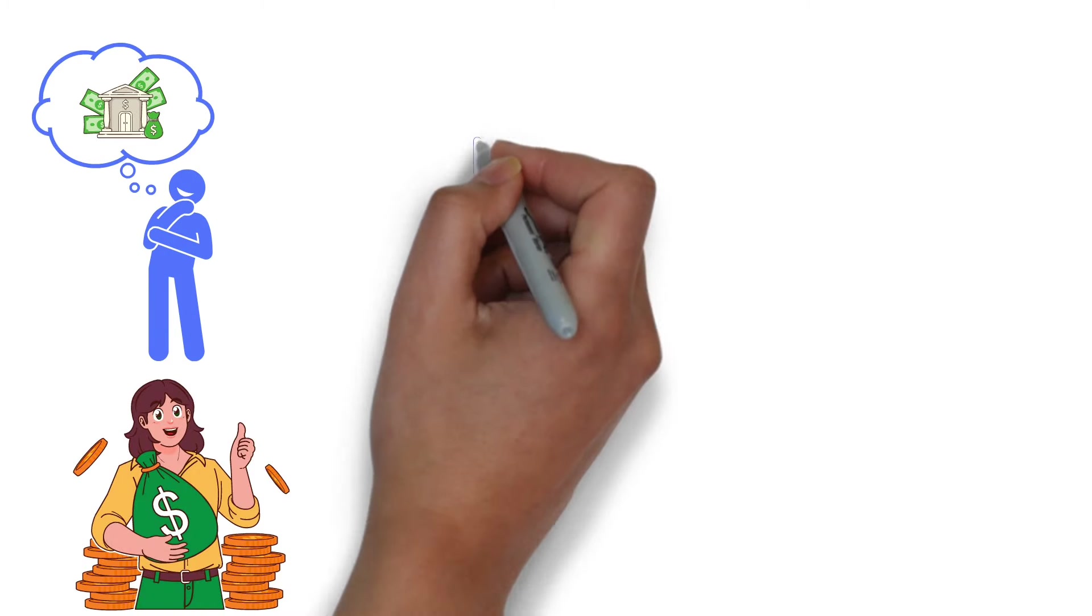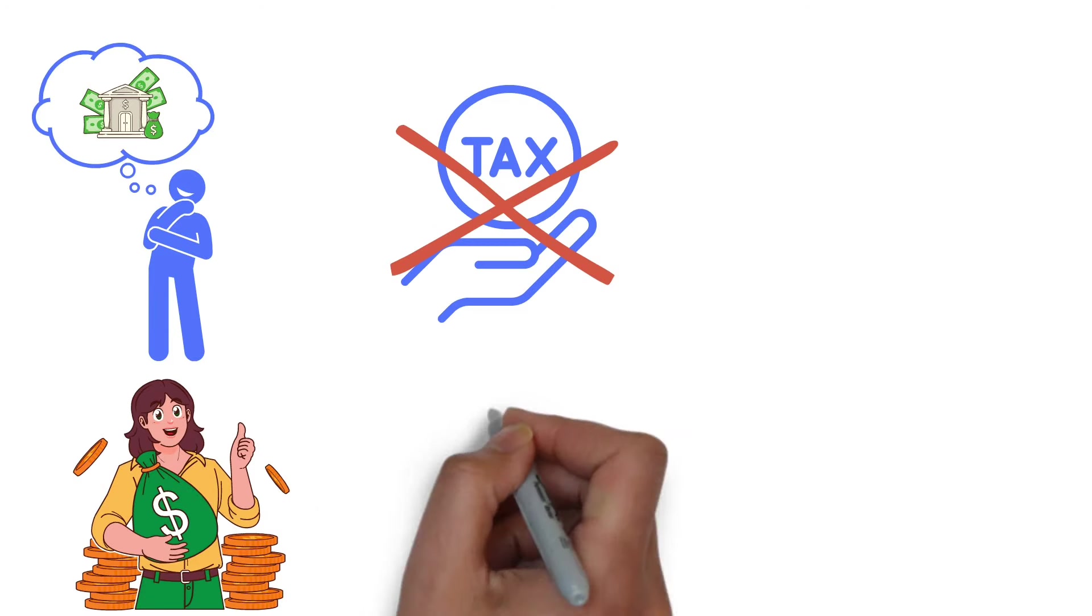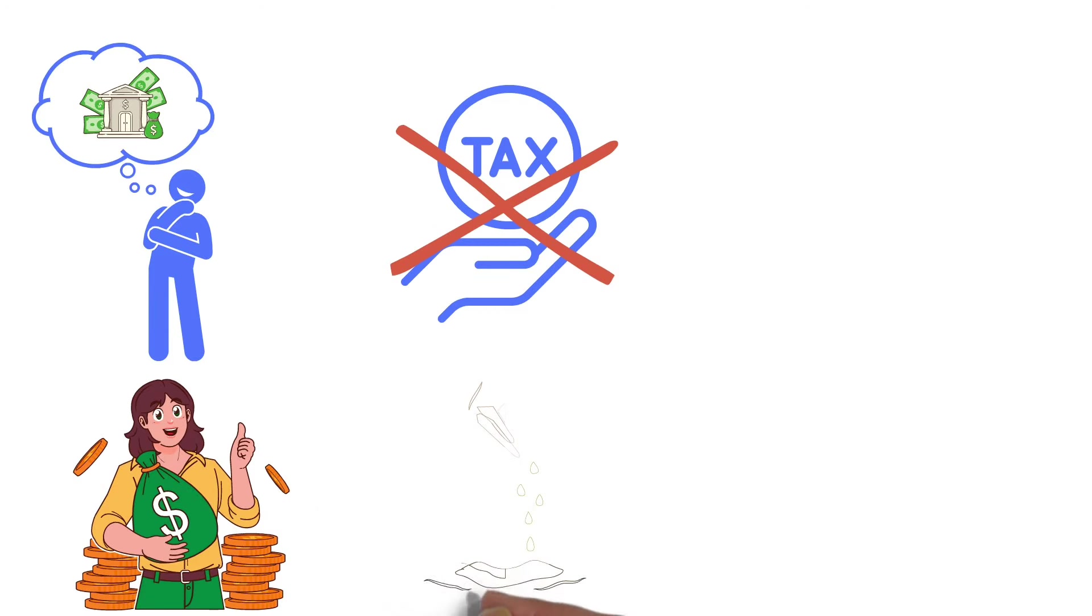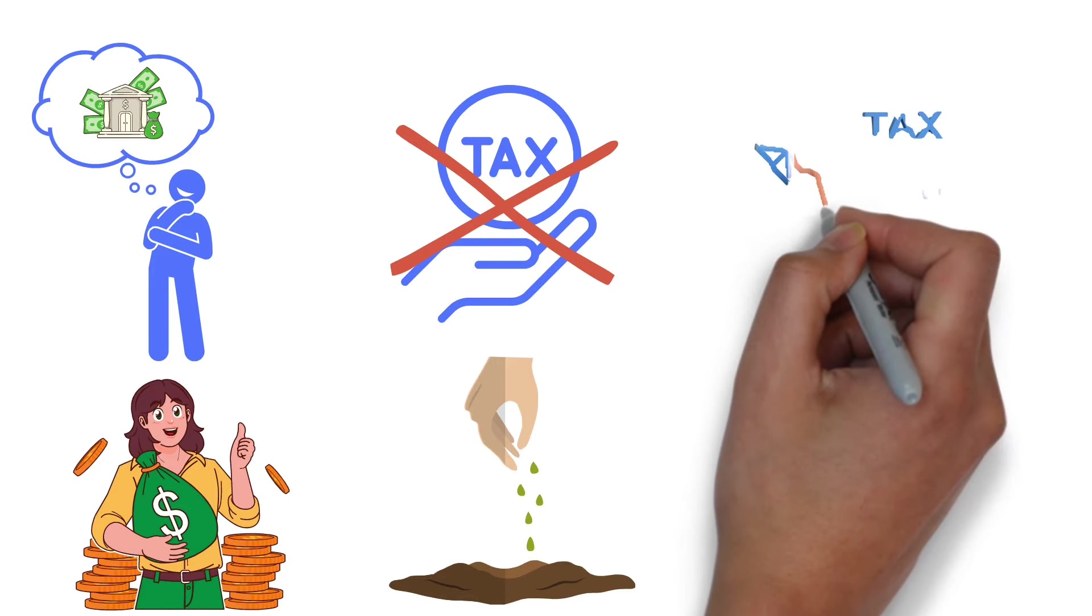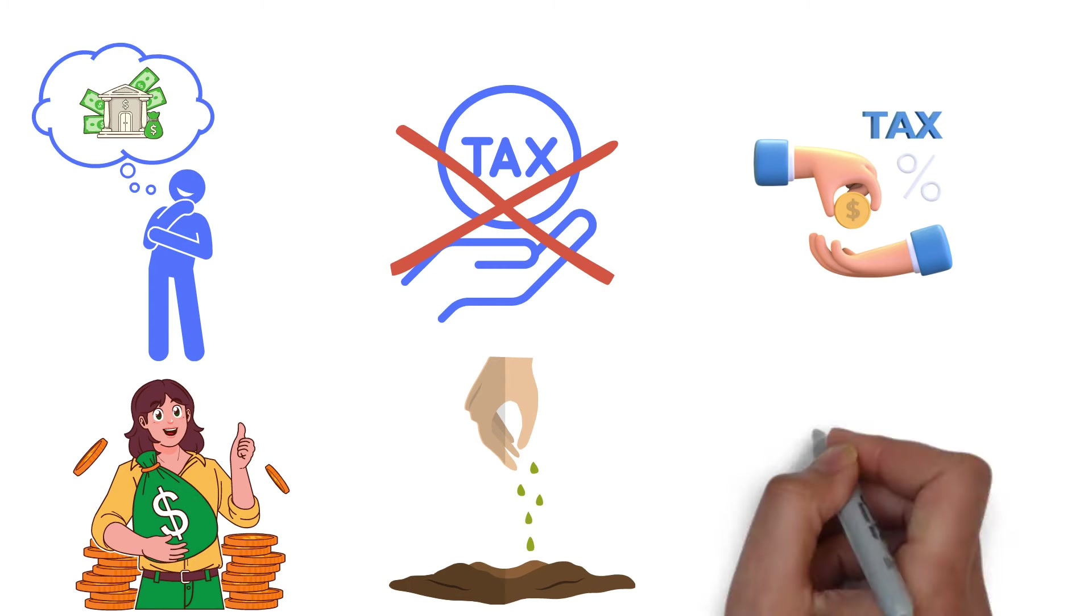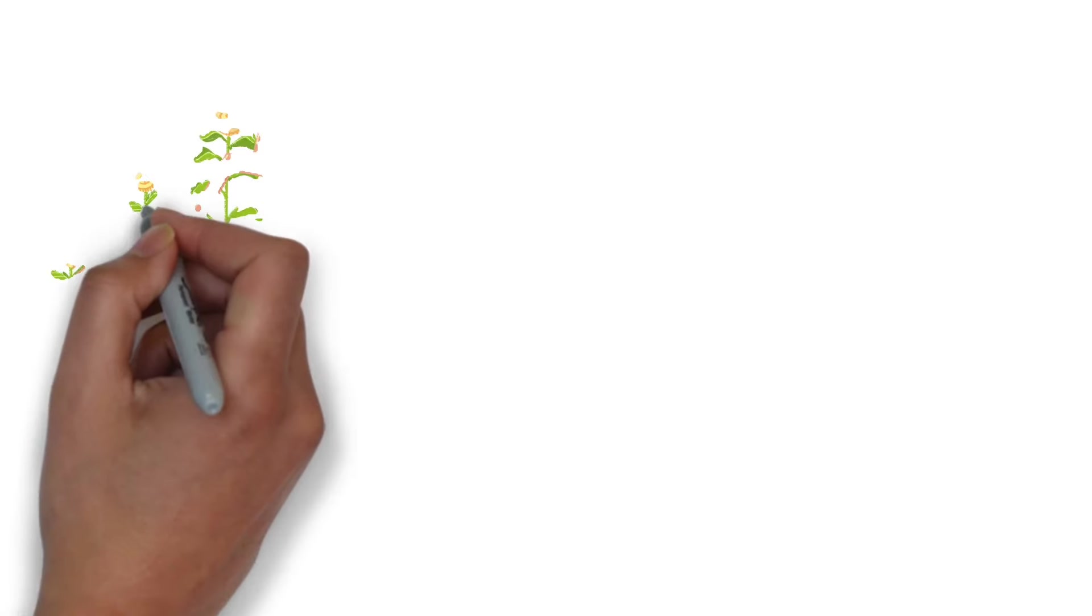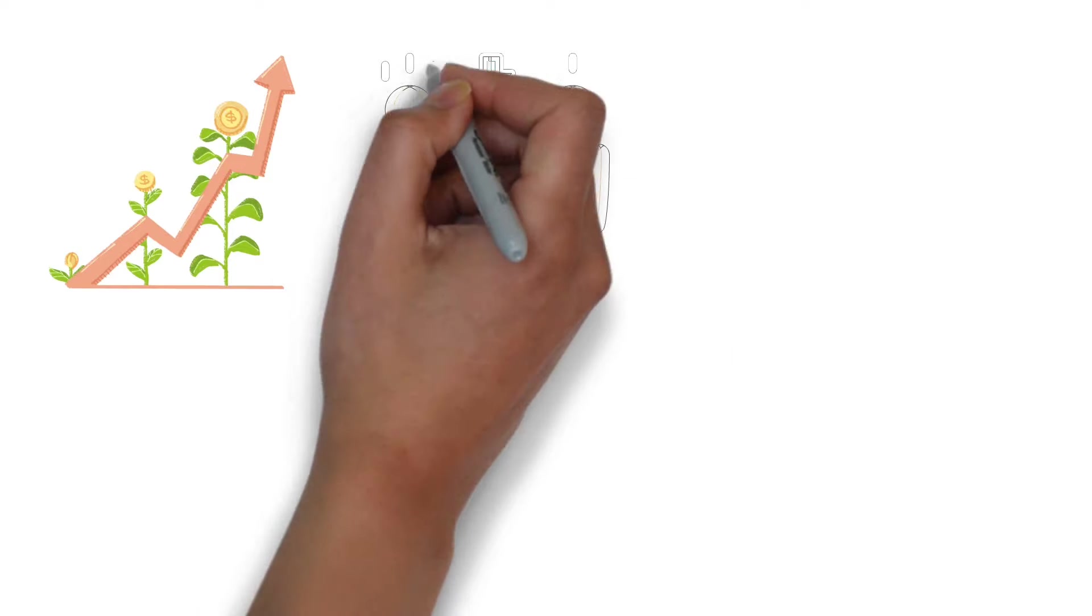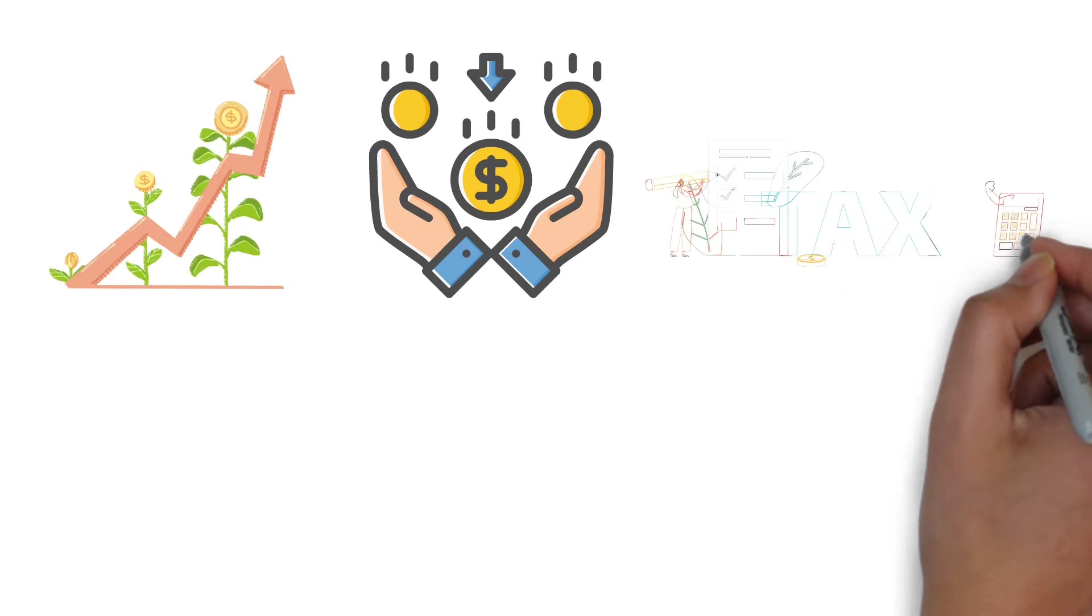In fact, with something like a 401k, you don't pay taxes on what you put in at the time you earn it. Instead, you pay those taxes years later when you take the money out in retirement. Think of it as a seed that you plant. In a regular investment account, you'd have to pay a small bit of tax on any new growth every year. But in a tax advantaged retirement account, you get to keep every apple. The tree gets bigger and makes more apples because it's not losing any along the way. You only share some of the apples much later, when the tree is fully grown and you decide to use them.